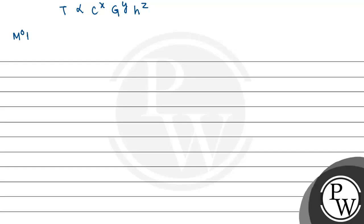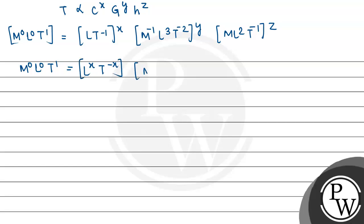This means M to the power 0, L to the power 0, T to the power 1 equals c's value which we calculated: L T minus 1 to the power x, G's value: M minus 1 L cubed T minus 2 to the power y, h's value: M L squared T minus 1 to the power z.